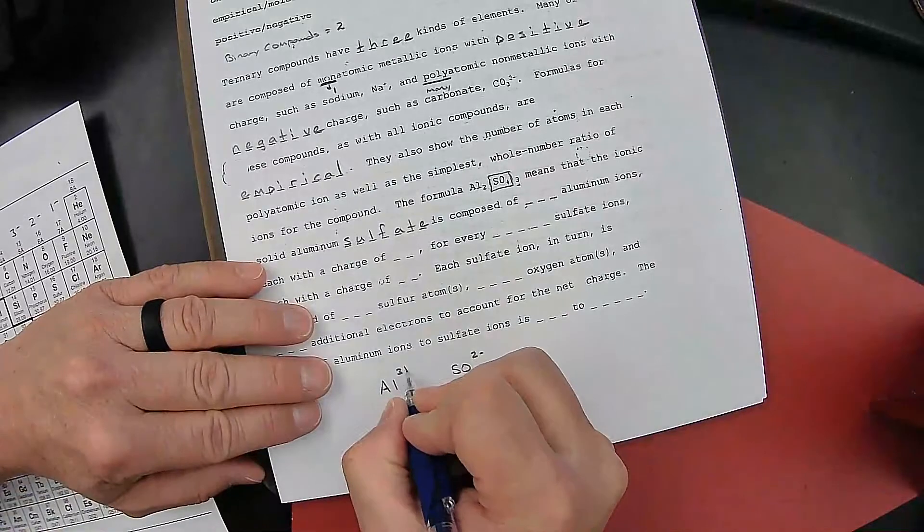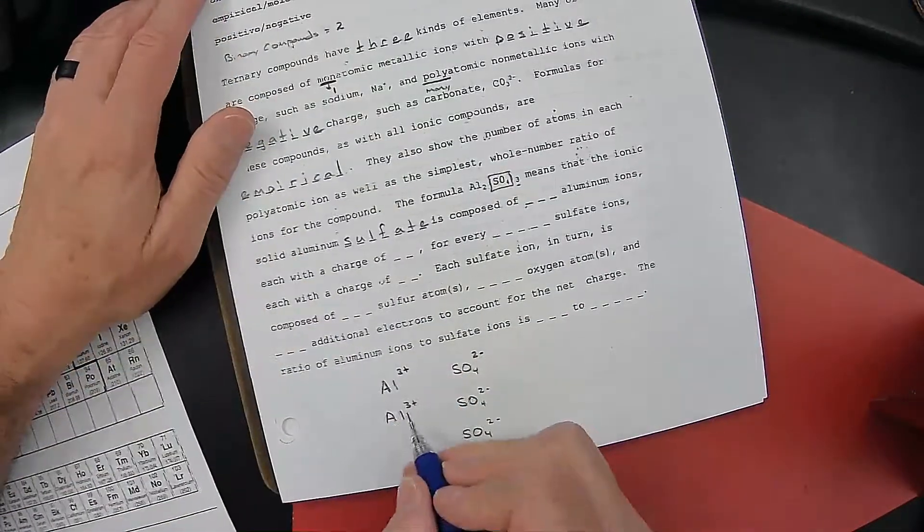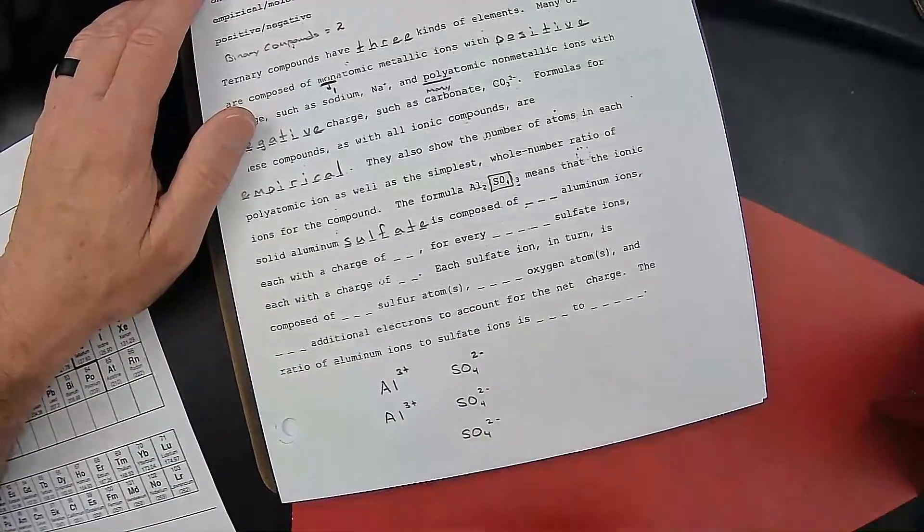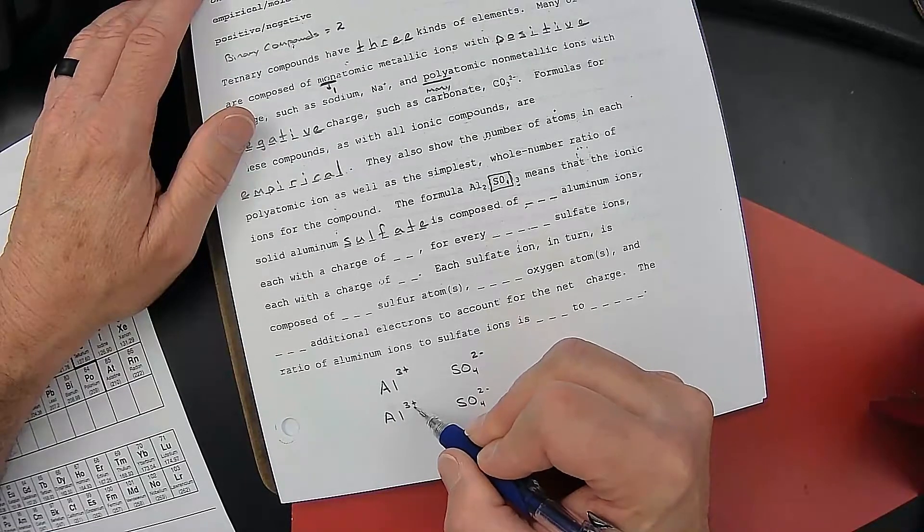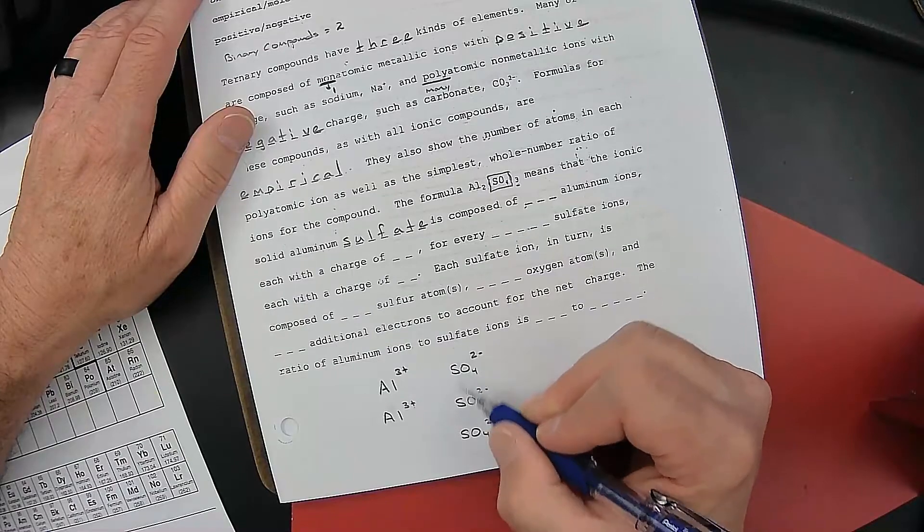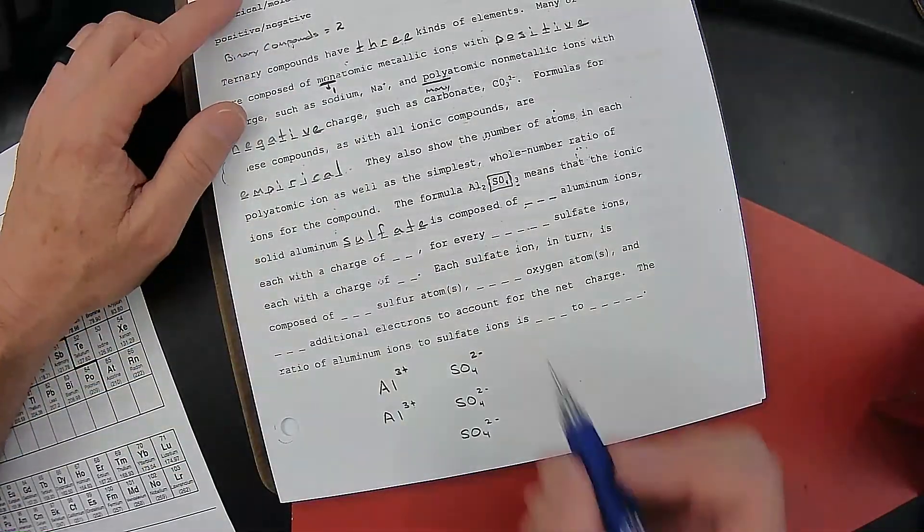3A forms a 3 plus. So 3 plus, 3 plus, and just like when we had a single metal and a single non-metal, the charges would balance. Same thing here. 3 plus 3 plus gives you a 6 plus. 2 minus, 2 minus, 2 minus gives you a 6 minus. It cancels out. It will always cancel out.